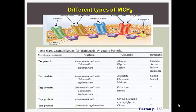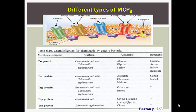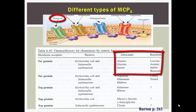There are different kinds of MCPs, or chemoreceptors, found in the cytoplasmic membrane of bacteria. For example, the Tap chemoreceptor binds to dipeptides, which serve as an attractant for E. coli. Some chemoreceptors can bind to several types of chemoeffectors. For example, the TSR chemoreceptor not only binds to serine, but can also bind to other chemoeffectors such as alanine, glycine, leucine, acetate, indole, and benzoate.